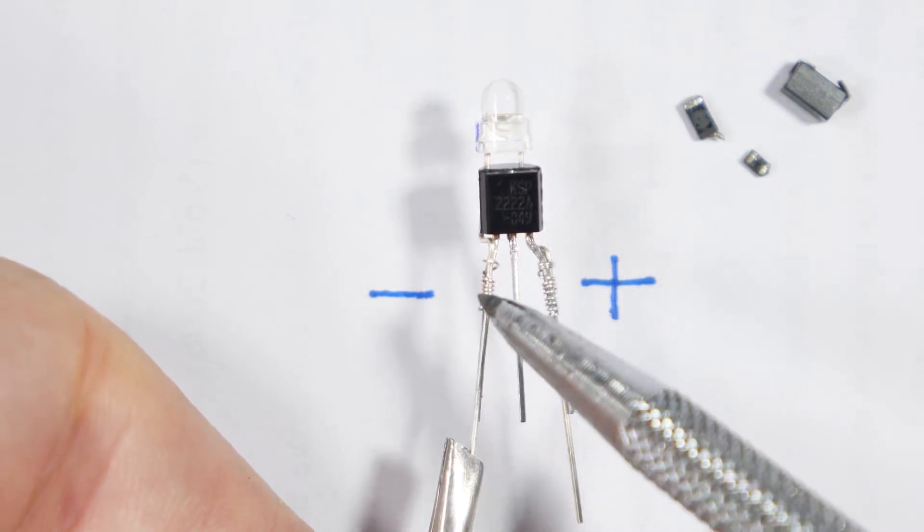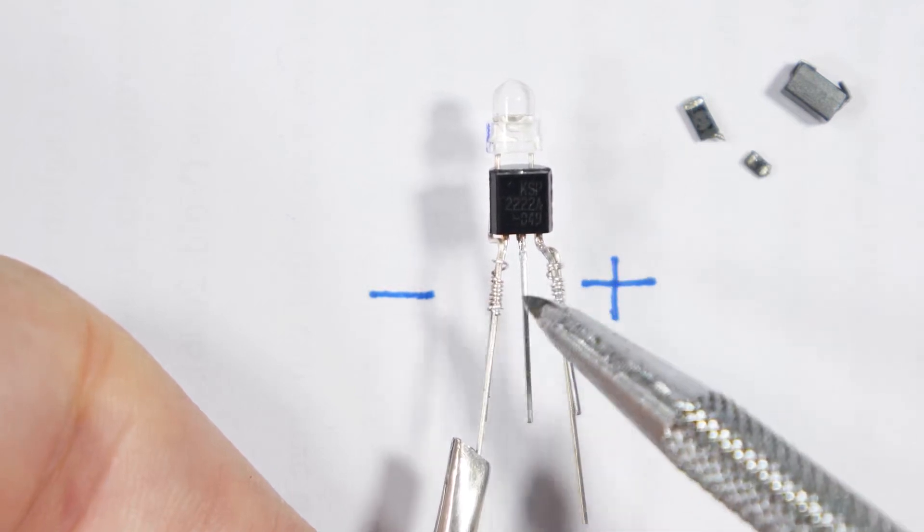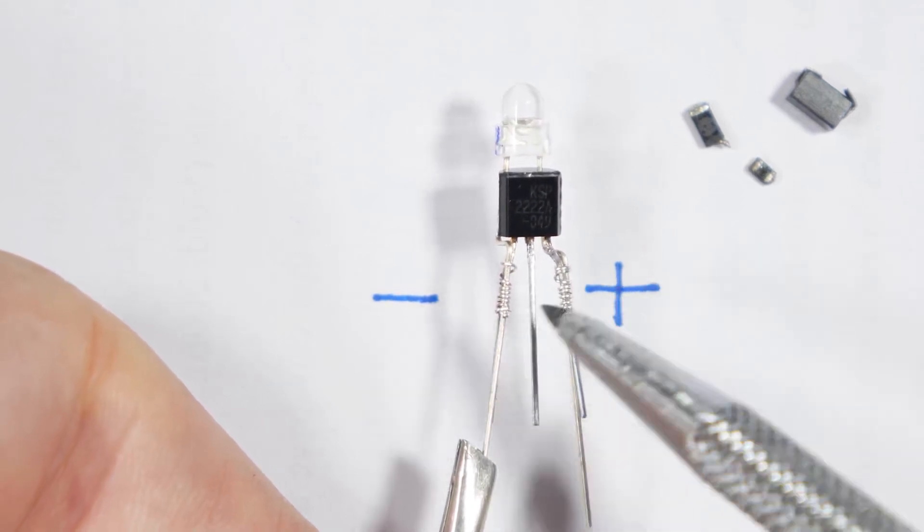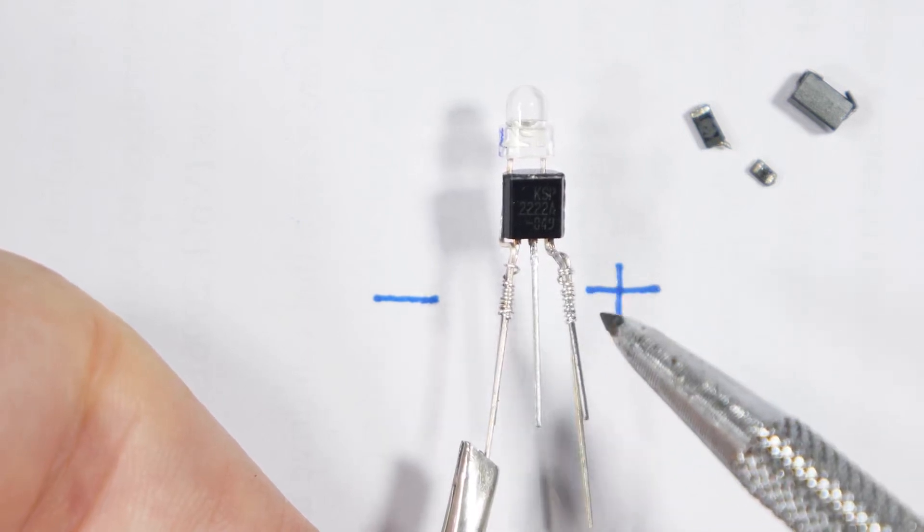When I go to solder these inductors and the power wires, it's going to fall apart, and that makes it really hard. So now I will go solder this, and then the step after that will be to put the inductors on.